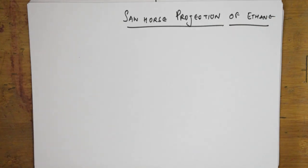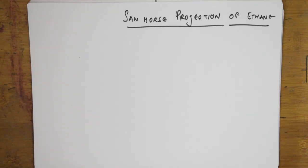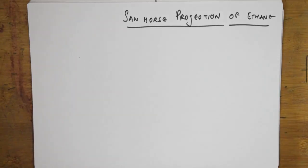Welcome to one more session of general organic chemistry. We have started with conformational isomers as part of general organic chemistry. I've already completed structural isomers, optical isomerism, and now I am doing conformational isomerism. In the previous video I gave the introduction of the ball and stick model of ethane, and taught sawhorse and Newman projections, and also staggered and eclipsed forms.